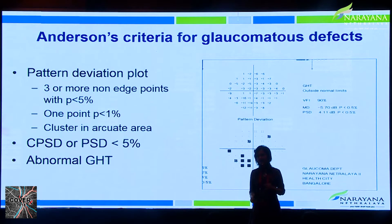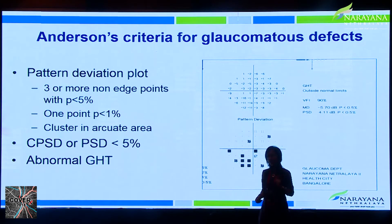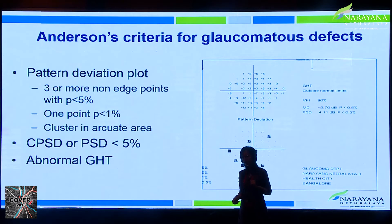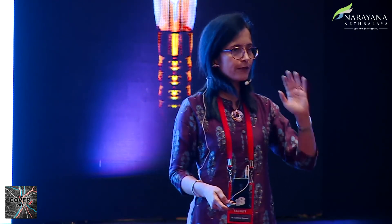To summarize Anderson's criteria for an abnormal glaucoma field: three or more non-edge points on the pattern deviation plot with p less than 5% (for 24-2, edge points are also included), one point with p less than 1%, or a cluster; PSD less than 5%; or GHT outside normal limits. However, Anderson's criteria do not mean the patient has glaucoma — clinical correlation is essential, as emphasized by previous speakers.